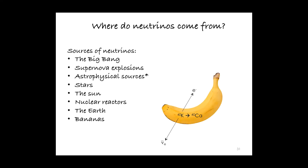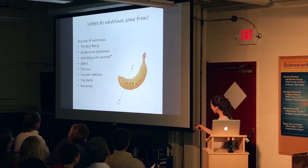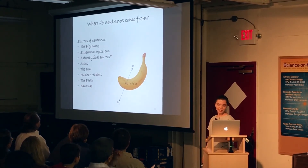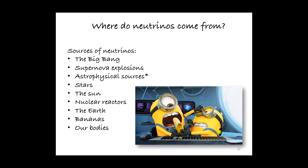And, of course, bananas. Bananas, we've established, are mildly radioactive. The potassium they contain — the particular isotope potassium-40 — likes to decay mostly into calcium-40, and in the process it releases an electron and an electron anti-neutrino. And we also emit neutrinos as a consequence, especially when we eat bananas.